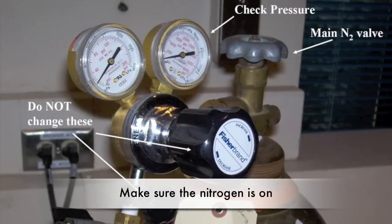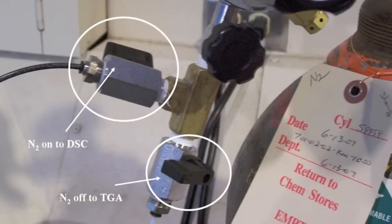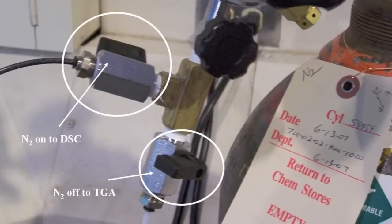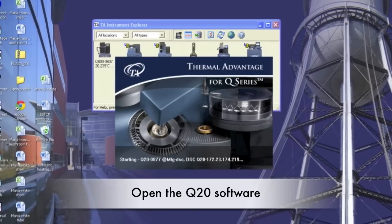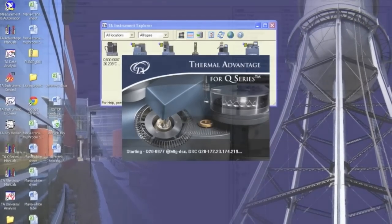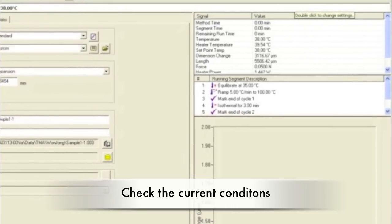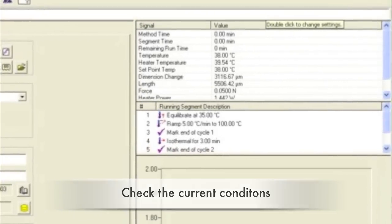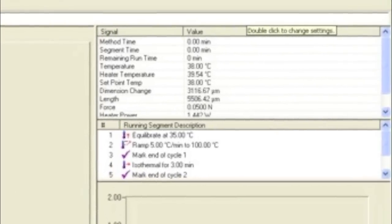Check to see that the nitrogen is on and the knob is open for the DSC. To open the software, click the TA Instrument Explorer and open up the Q20 software. The information in the top right corner shows the current conditions. Check to see that the sample purge flow is set at 50 mL per minute.